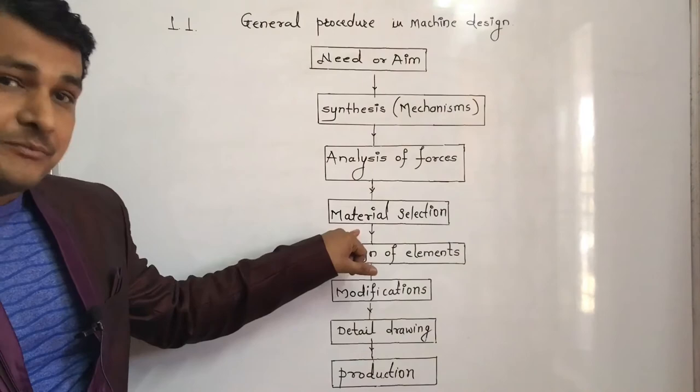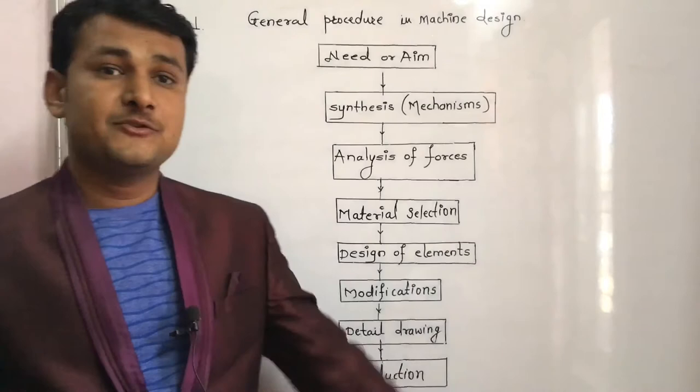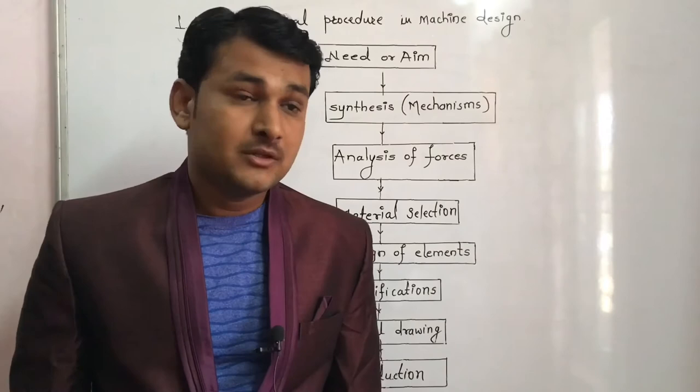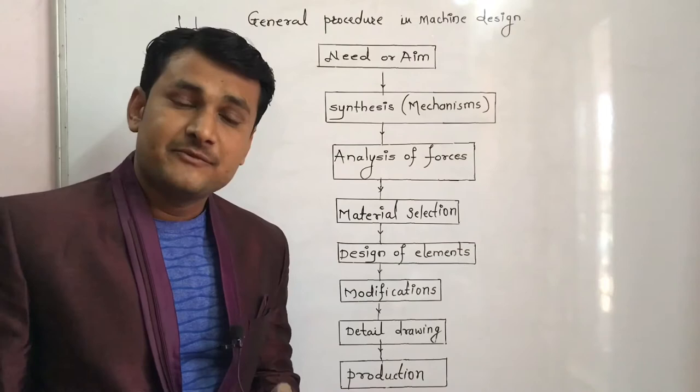The best material should be selected for each member of the machine. Next point is Design of Elements. In design of elements, we have to find out the size of each element by consideration of forces acting on each member and the permissible stresses for the material used. Care must be taken that they should not bend, deflect, or deform beyond the permissible limits.